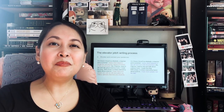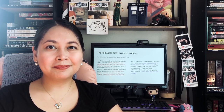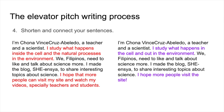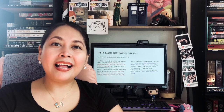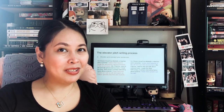But I think it still needs some tweaks to make it shorter. In order to do that, you can shorten and connect your sentences. Instead of sticking to the second sentence as-is, we can shorten it to say: 'I study what happens in the cell and out in the environment,' removing the term 'natural processes' because that might be just a little bit too wordy. And we can shorten the last sentence to say that I hope more people visit the site, without having to single out teachers and students. Now that we have that latest edit, let's hear once again how it sounds like.